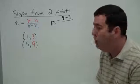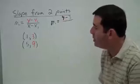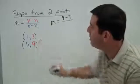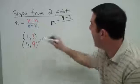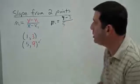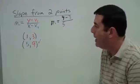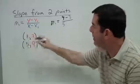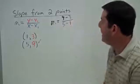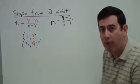Now once we've chosen to put 9 first on the top, the corresponding x has to go first on the bottom. So 5 must go first on the bottom now. Let's take this x minus the other x, and that gives us 5 minus 1 on the bottom.